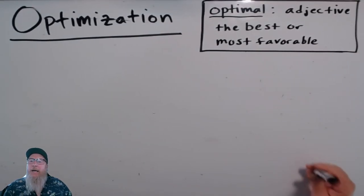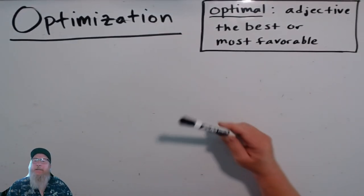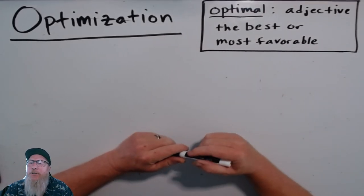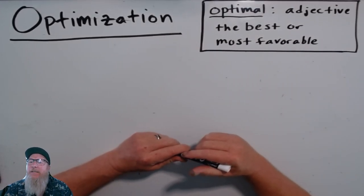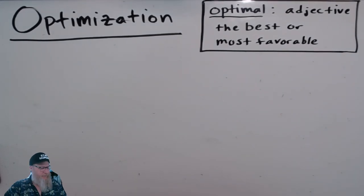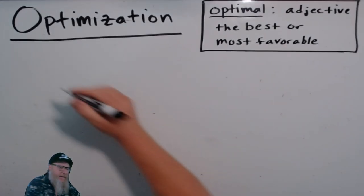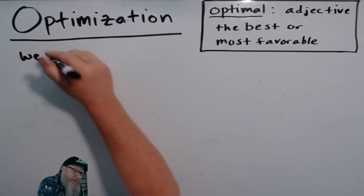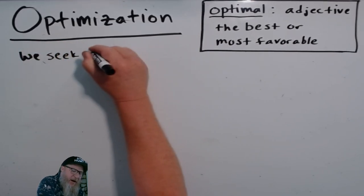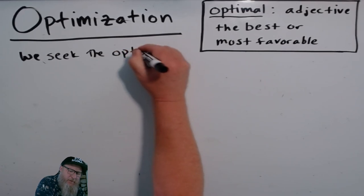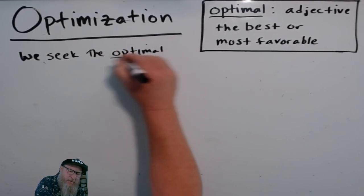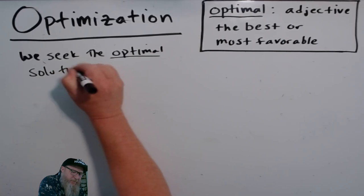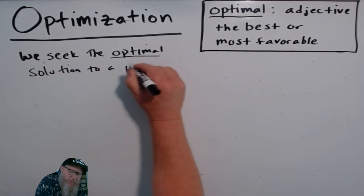Well hey, it's Dr. J. Today we're gonna learn about optimization. Optimal is an adjective and it means the best or most favorable. So we seek the optimal solution to a problem.